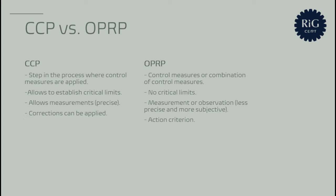For OPRPs, the standard uses the term 'observation' in the definition — measurement or observation enables control of the process. In contrast, for CCPs only measurement is used. Observation is considered less precise and more subjective than measurement. To conclude: if a hazard has a high probability of occurrence and high severity, and if it is feasible to measure, detect, and correct the failure, then we have a CCP. OPRPs are usually applied as a combination of control measures, so that the failure of any single control has only a minor impact on food safety.